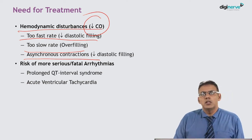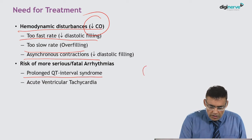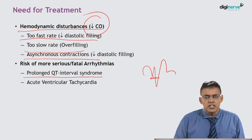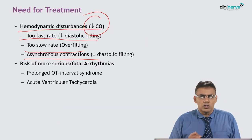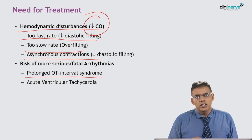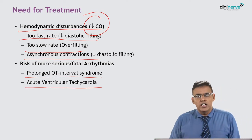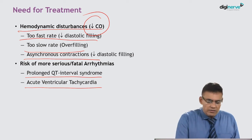A second risk associated with arrhythmias is prolonged QT syndrome. As seen on the ECG, there is a P wave, QRS complex, and T wave. When the QT interval is increased, it carries a risk of fatal arrhythmias. We also need to treat acute ventricular tachycardia, which is a serious arrhythmia that could be fatal. So we treat arrhythmias because they affect cardiac output and can result in various fatal arrhythmias.